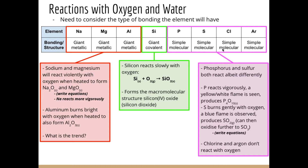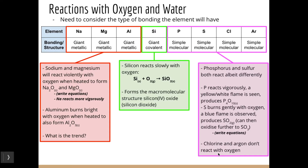Then we have our simple molecular structures. Phosphorus and sulfur both react, albeit differently. Phosphorus reacts vigorously — a yellow-white flame is seen — and it produces the phosphorus oxide compound. Sulfur also reacts but burns gently, producing a blue flame, and we produce SO₂ which can be oxidized further to SO₃. However, the phosphorus reacts more vigorously, and chlorine and argon don't react with oxygen directly at all.